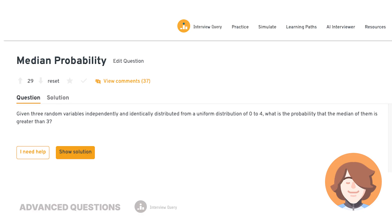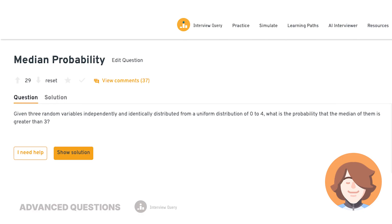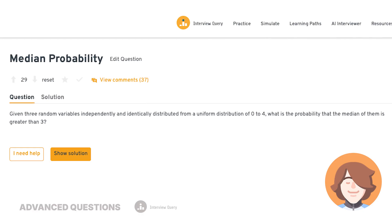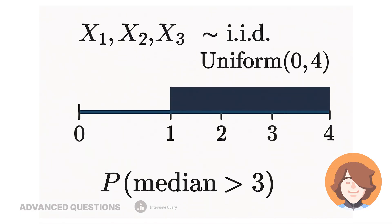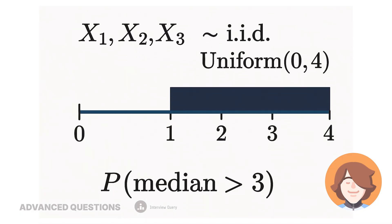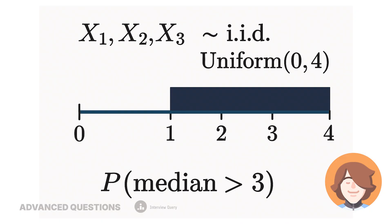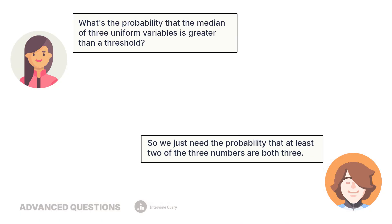Question four: what's the probability that the median of three uniform variables is greater than a threshold? We're given three random variables from a uniform distribution between zero and four, and we want the probability that the median is greater than three. Since the variables are continuous and identically distributed, every ordering of the three values is equally likely. For the median to be greater than three, at least two values must be greater than three, because the median is the middle value after sorting. So we just need the probability that at least two of the three numbers exceed three — I'll leave that as an exercise. All of these questions are available on Interview Query.